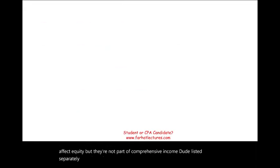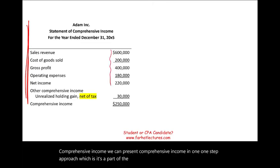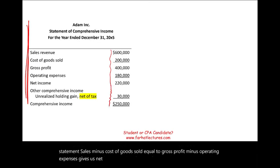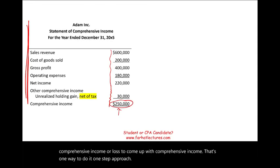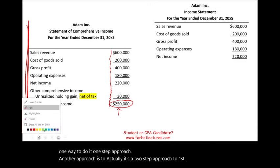How do we present comprehensive income? There are two ways. We can use a one-step approach, where it's part of the income statement: sales minus cost of goods sold equals gross profit, minus operating expenses gives net income, and we continue adding or subtracting other comprehensive income or loss to arrive at comprehensive income. Another approach is the two-step approach, where you first create the income statement separately.